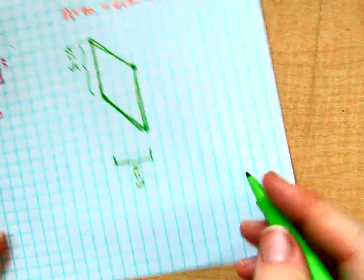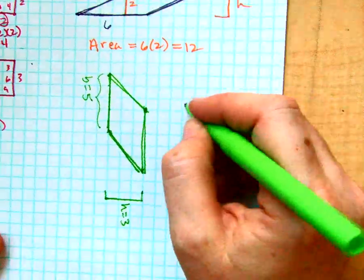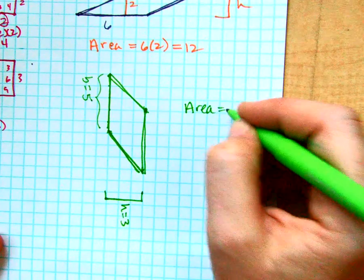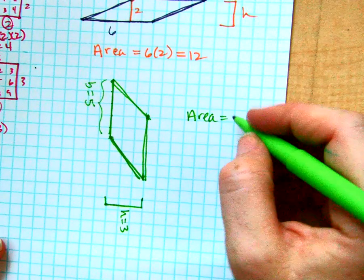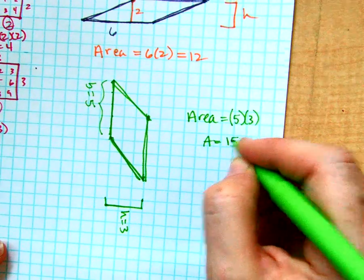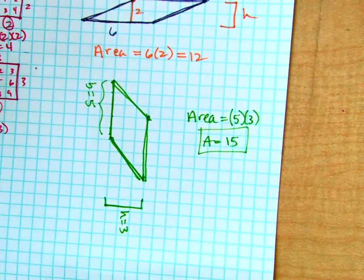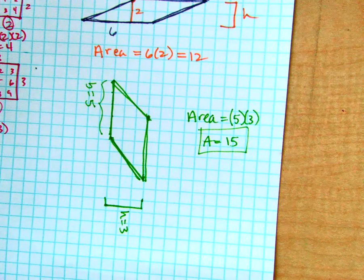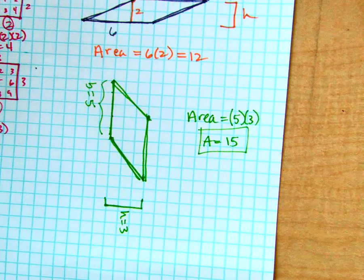So that means the area of this particular parallelogram is just 5 times 3, which is 15. Hope that helps. Alright.